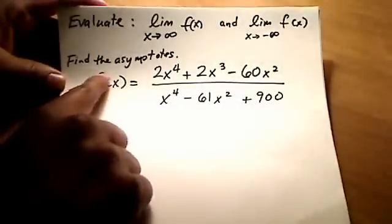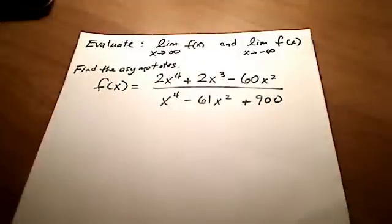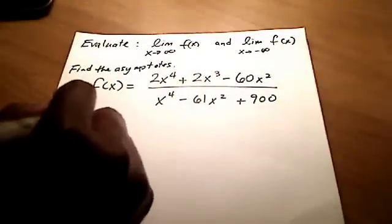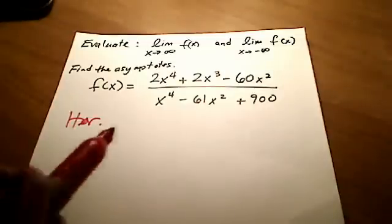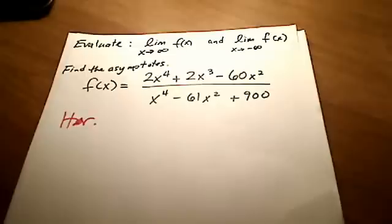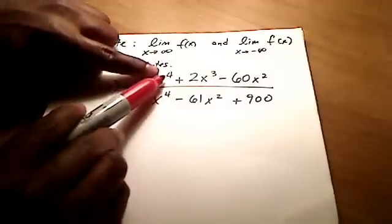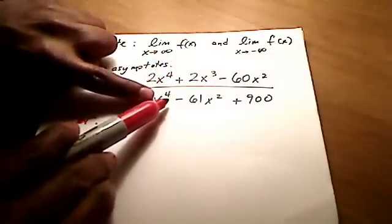They want us to find all the asymptotes, so we'll find the vertical ones as well. Let's find the horizontal asymptotes first. To find the horizontal asymptotes, one probably easy way is to notice that the degree of the numerator is 4 and the degree of the denominator is 4.